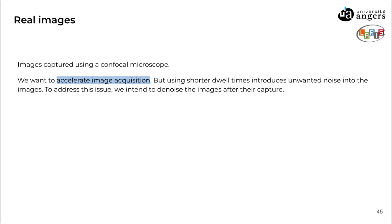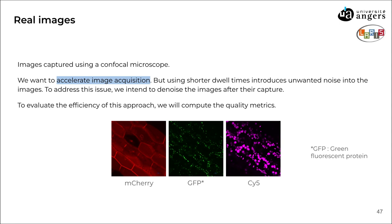Now for the last part, we are going to use real images, especially those captured using a confocal microscope. Our goal is to accelerate image acquisition using shorter dwell times, but using shorter dwell times frequently introduces unwanted noise into the images. So to address this issue, we intend to denoise the images after they were captured, and to evaluate the efficiency of this approach, we will compute the quality metrics. The three reference images were taken with the longest dwell time of 16 microseconds. There are three different proteins: the first one, M-Cherry, represents the cell of the plant; the second one, GFP or Green Fluorescent Protein, marks the mitochondria; and the last one, Cy5, represents the chloroplasts of the plant.